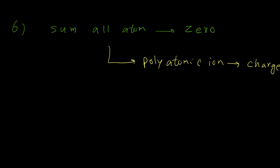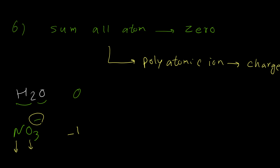For example, water is a neutral compound. The sum of oxidation numbers for 2 hydrogen atoms and 1 oxygen atom should be 0. For the nitrate anion, the sum of oxidation numbers should equal -1. So if we add the oxidation number for nitrogen and 3 oxygens together, the answer should be -1. By using this rule, we are able to calculate oxidation numbers.